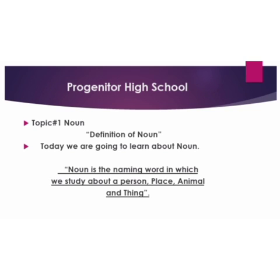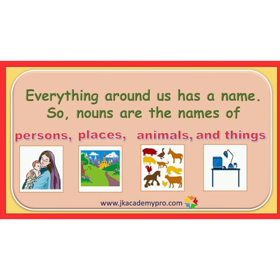Everything around us has a name, so nouns are the names of persons, places, animals, and things. In the first picture you can see a woman representing a person. In the second picture you can see a castle representing a place. In the third picture you can see animals, and in the fourth picture you can see things in the shape of a computer, which cannot move.